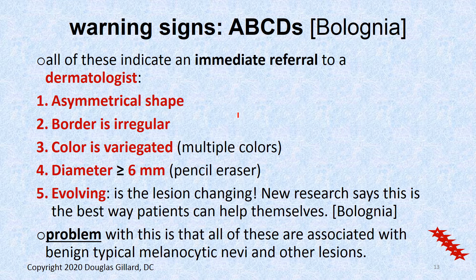The ABCDE rules: A is for Asymmetrical — you can't fold it in half. B — the Borders are choppy, rat-bitten, very irregular. C — the Color is multi-colored or variegated. D — the Diameter is at or greater than six millimeters, about the size of a number-two pencil's eraser. And Bologna adds E for Evolving — probably the most supported by new research — because if the mole is changing in shape, color, or size, that's when it's time to see a dermatologist.